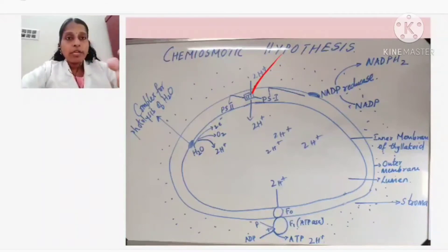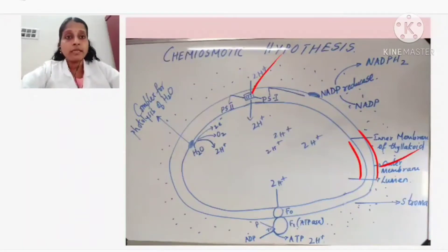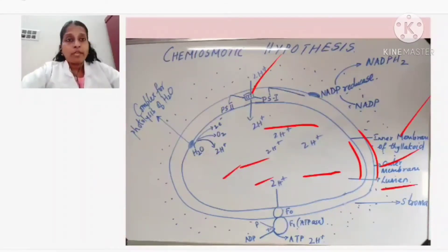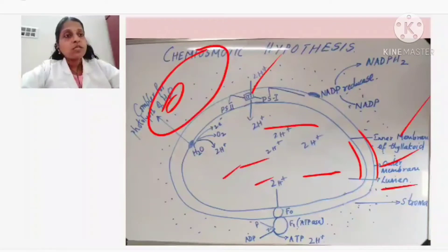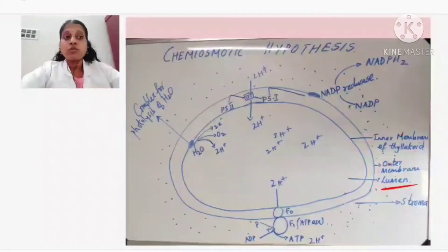When you are seeing this thylakoid, it has two membranes - one is the outer membrane and one is the inner membrane. There is an outer membrane and inner membrane of the thylakoid. Inside you can find a cavity which we call the lumen of the thylakoid. The lumen is the cavity of the thylakoid. This thylakoid is present inside the chloroplast in the stroma - the whole cavity in the chloroplast we call the stroma. The blue dots in the diagram represent the stroma.